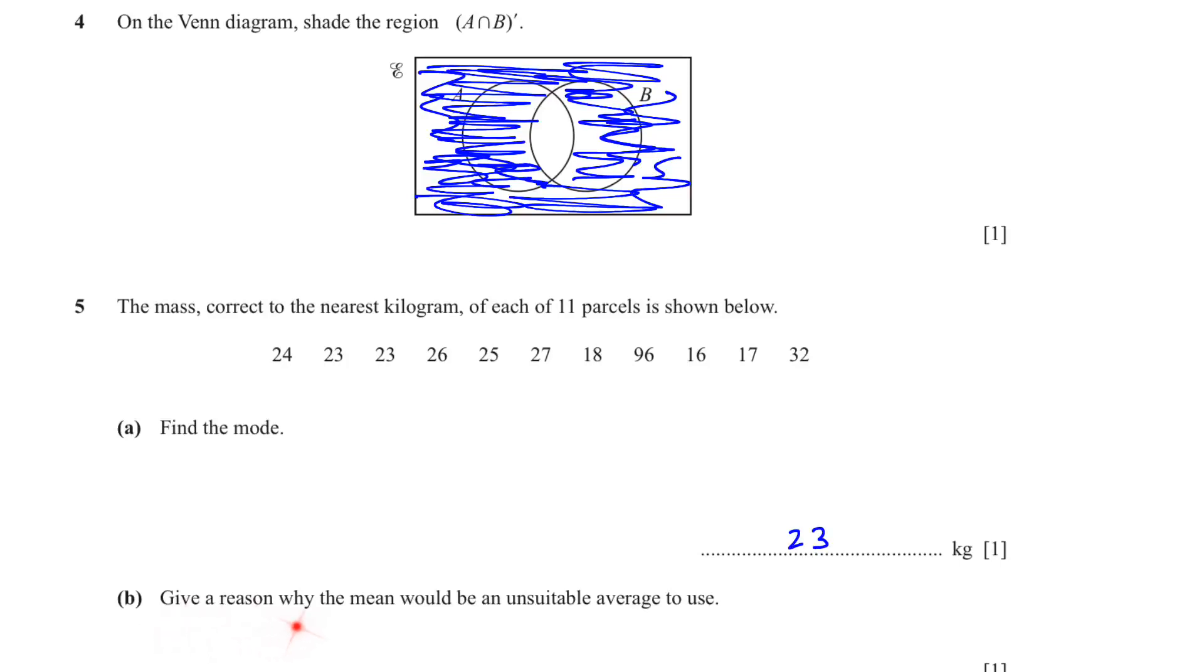Next, give a reason why the mean will be an unsuitable average to use. Because to find the mean you need to have your data in a certain limit. Here you see everything is between 16 to 32 except for 96. You have an extreme value. So mean is not an appropriate average to use because of one extreme value.